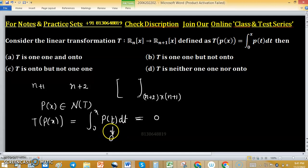It is clearly understood that T(0), as the zero polynomial, will be 0. So the nullity of this linear transformation is 0, which means T is one-to-one.